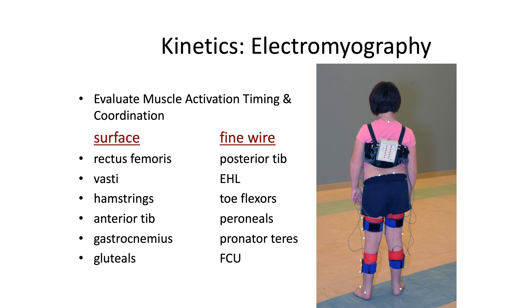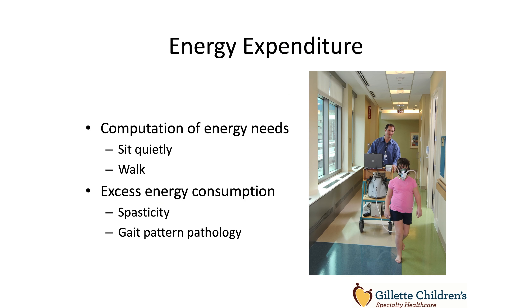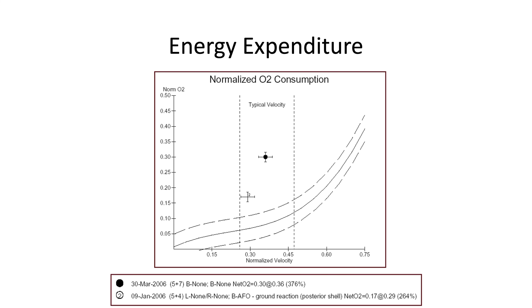We also measure EMG. Almost all of our patients have surface EMG acquired, though we can do fine wire EMG for various muscles. For gait purposes, most of the data we need can be gathered with surface electrodes, and patients are quite happy to come back because we haven't put a fine wire in. We output all of that data on graphs presented to our clinicians for interpretation.